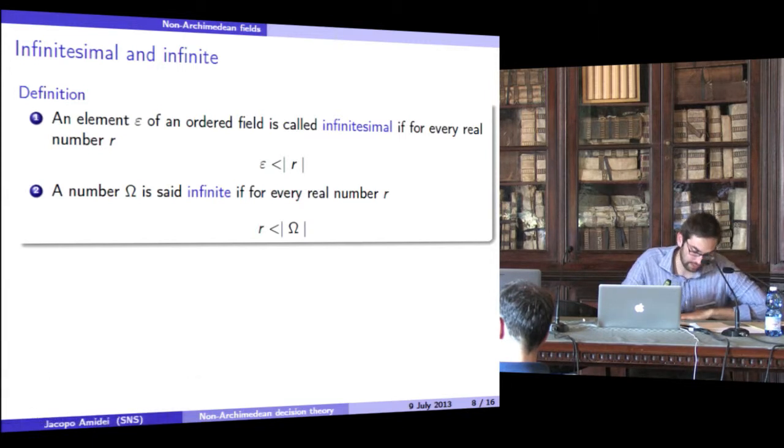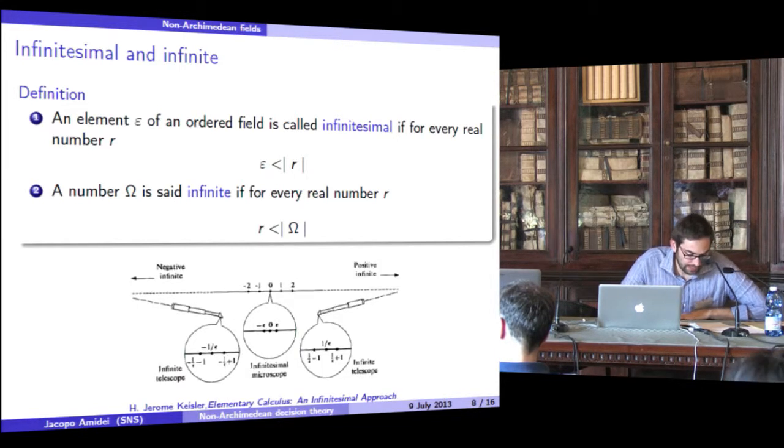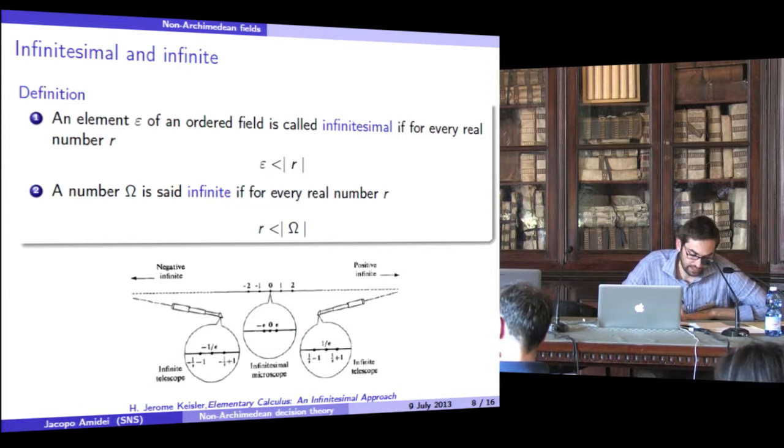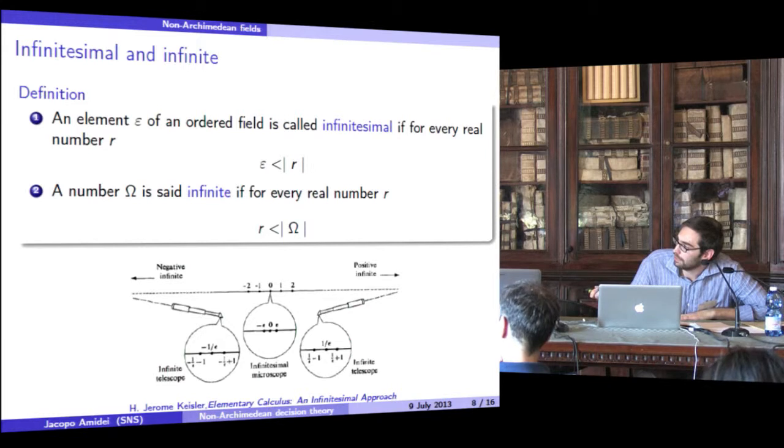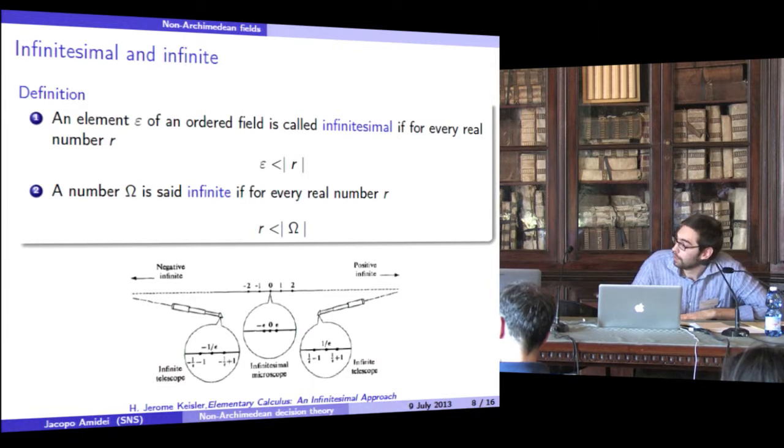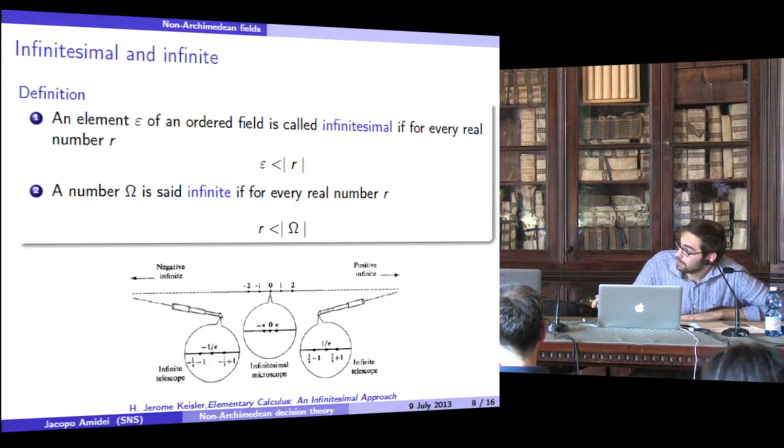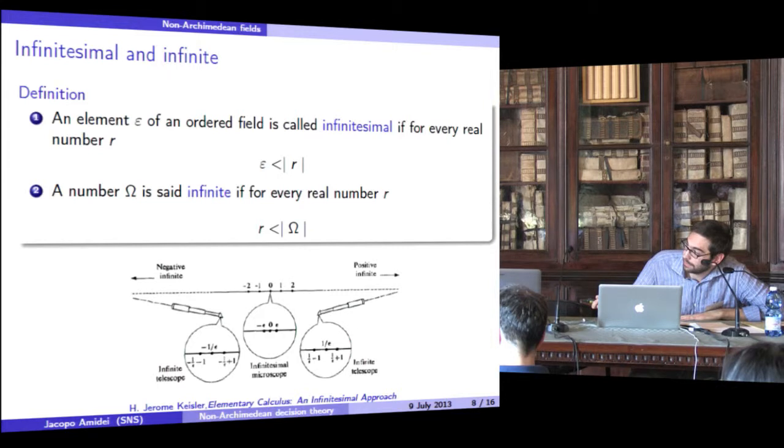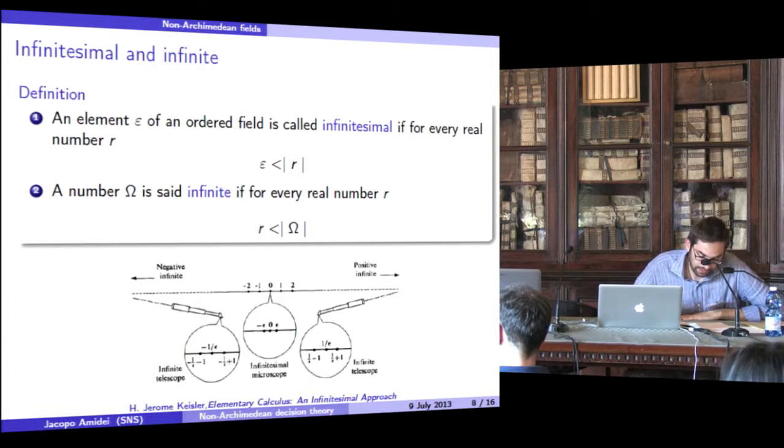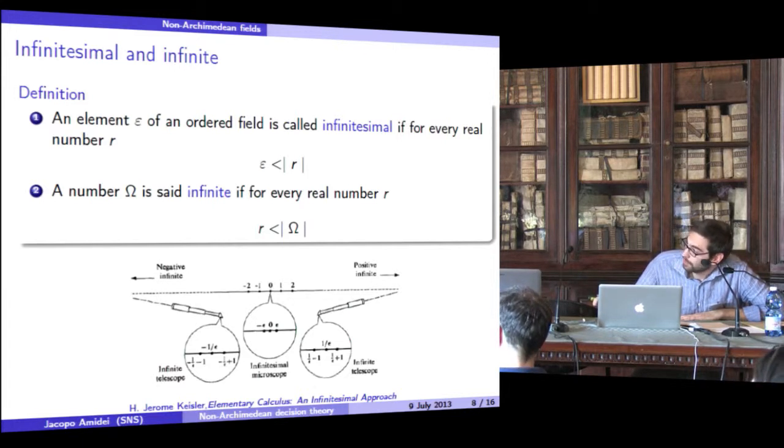Let's give a visual representation of infinite numbers and infinitesimal numbers. In order to do so, we need an infinitesimal microscope and an infinite telescope. We suppose that this is the real line. Our microscope shows us an infinitely small portion of space near zero. And this is infinitesimal positive and this is negative infinitesimal. Our telescope shows us a portion of space that goes beyond the real line on both sides, positive and negative.